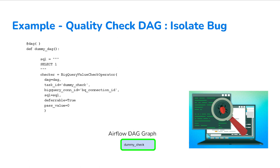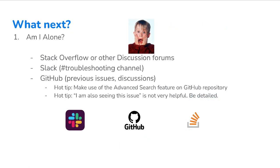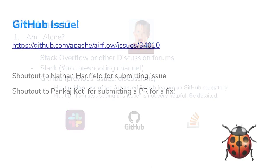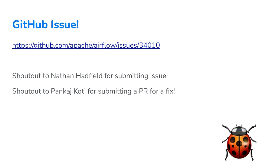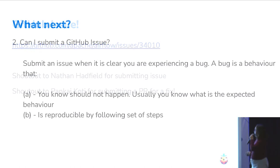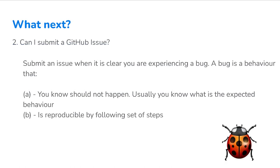This was actually reported a month or so ago by Nathan Hatfield, who did a great job submitting that bug, and Pankaj Koti submitted a PR for the fix. We can look at the issue template in a moment. Really, what you want to ask is: can I submit a GitHub issue? You can do so when you know you're seeing behavior that should not happen — there's an expected behavior and one you're seeing, and they're clearly different.